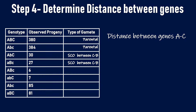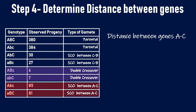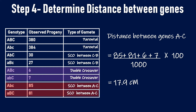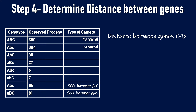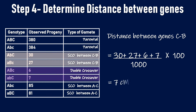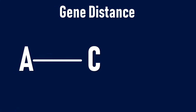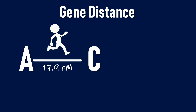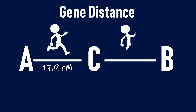The fourth step is to determine the distance between the genes. To determine the distance between genes A and C, we add the sum of the single crossovers between genes A and C plus the double crossover progenies, divided by the total number of progenies, multiplied by 100, which gives us 17.9 centimorgans. Similarly, the distance between genes C and B is the sum of the single crossovers between C and B plus the double crossover progenies, divided by the total progenies into 100, which gives us 7 centimorgans.